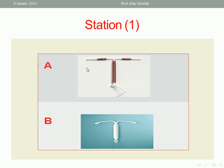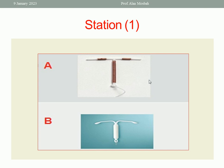What is the method of insertion of A? Before the procedure, counsel the patient about how the IUD will be inserted, the possible side effects, and the advantages and disadvantages. The patient should evacuate her bladder. All instruments should be ready: self-retaining vaginal speculum (Cusco's speculum or Grave's speculum), uterine sound, tenaculum, antiseptic, IUD, gauze, and forceps.